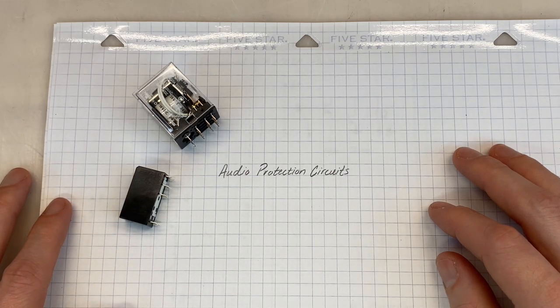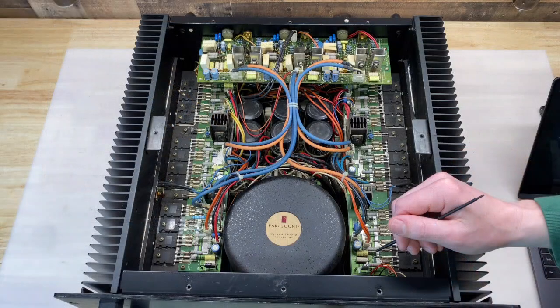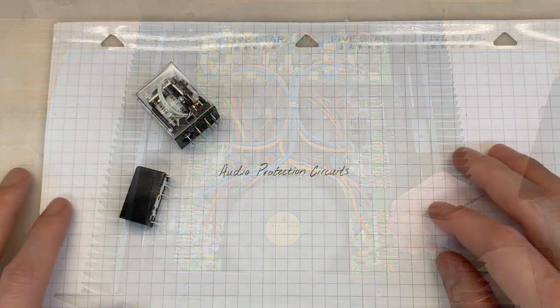So in this video, I'll go over the protection circuit for an amplifier that I recently worked on, the Parasound HCA-2003A.